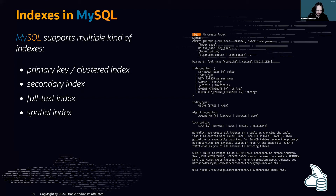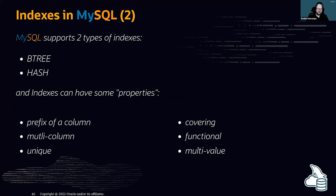MySQL has two types of indexes: B-tree indexes and hash indexes. All indexes can have properties such as prefix of a column, multi-column, unique, covering, functional, and multi-value. These properties help you create the right index for your workload.